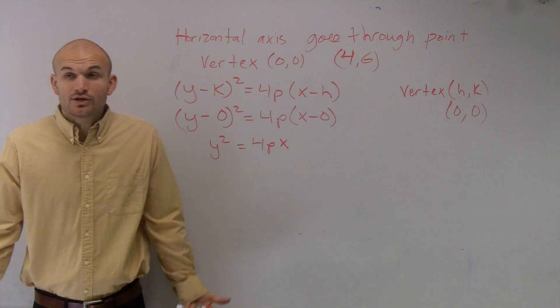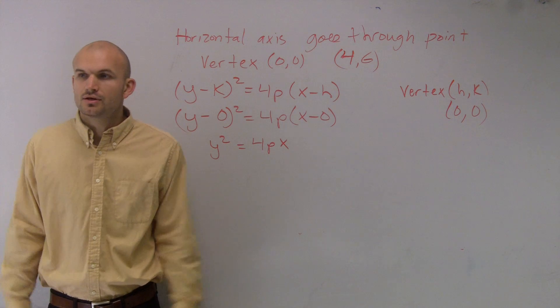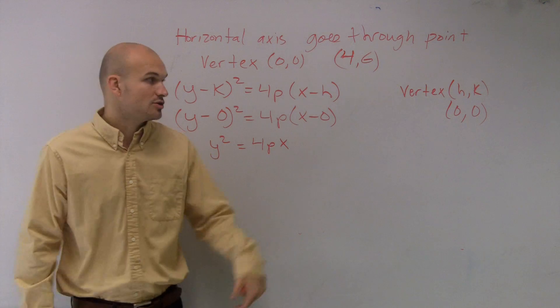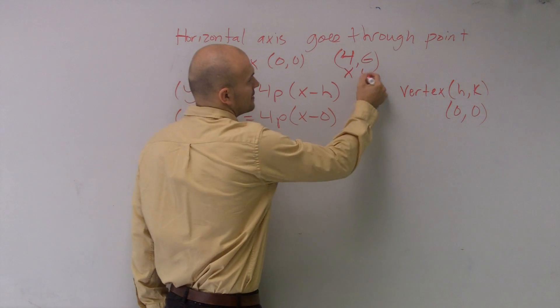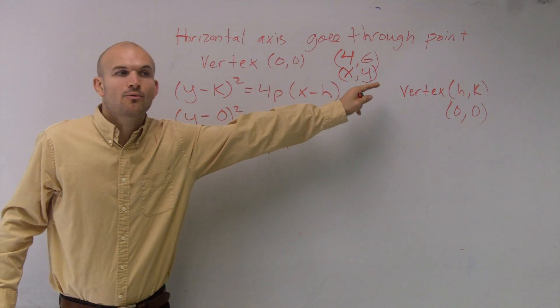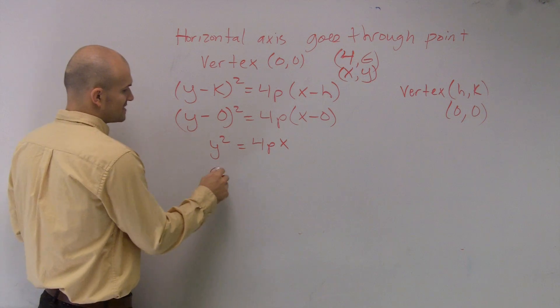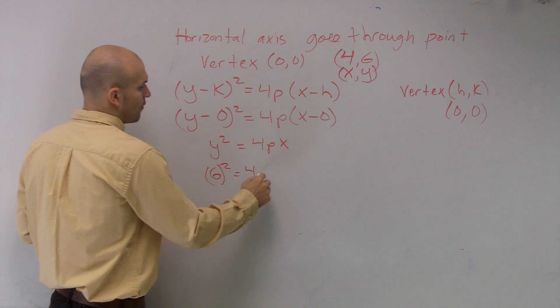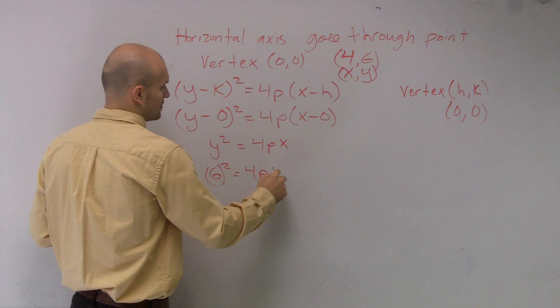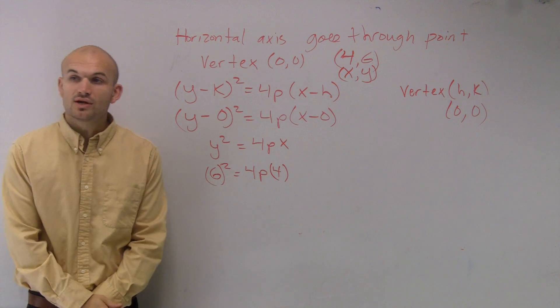Now the next thing, the only other information it gives us is it goes to the point (4,6). So how can I use that information? Remember, a given point on a line, a parabola, a circle, whatever, has an x and y coordinate. So what I'm going to do is I'm going to use that x and y to plug them into my graph. So therefore I have 6² = 4 times p times 4.